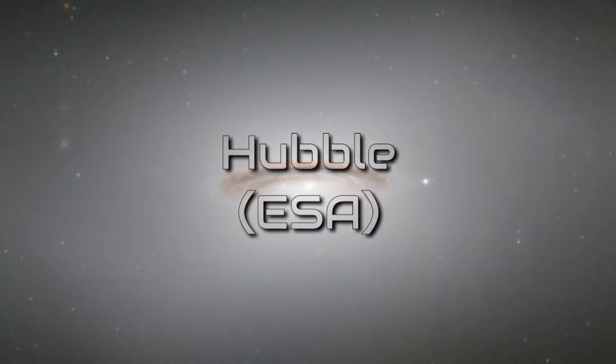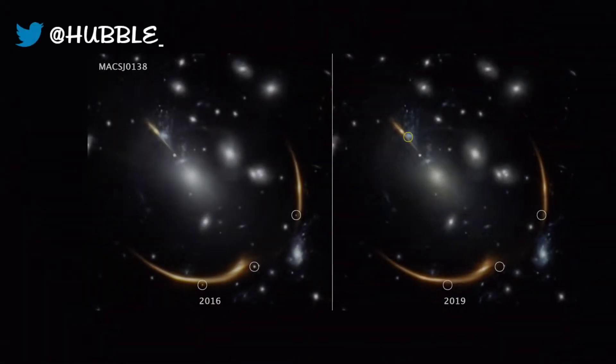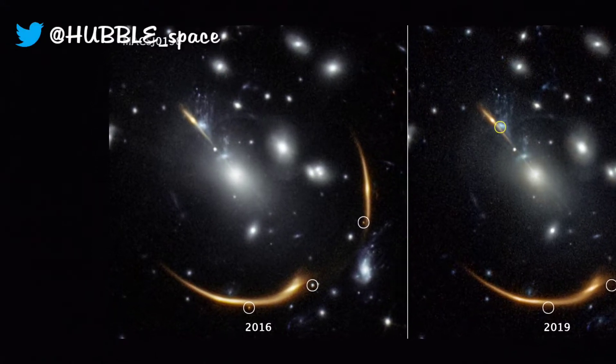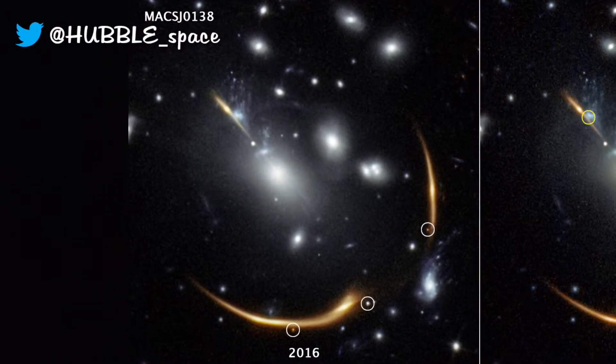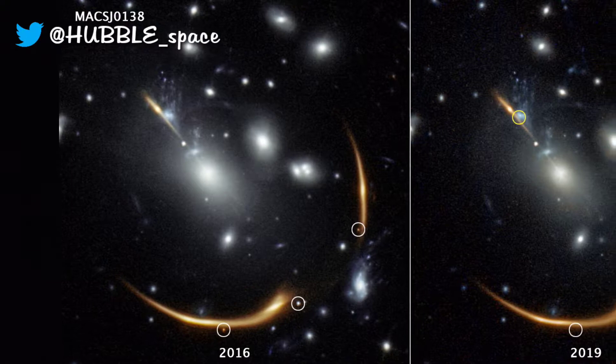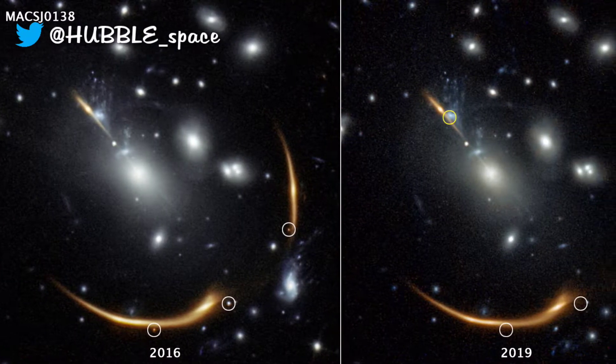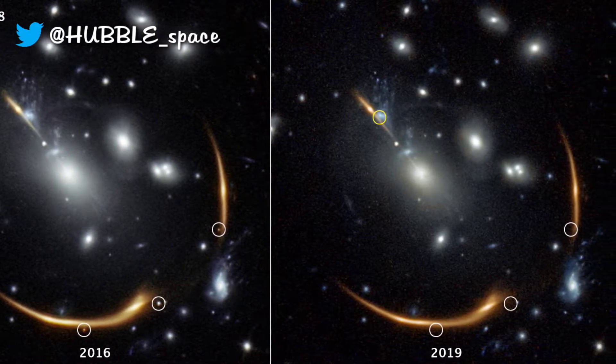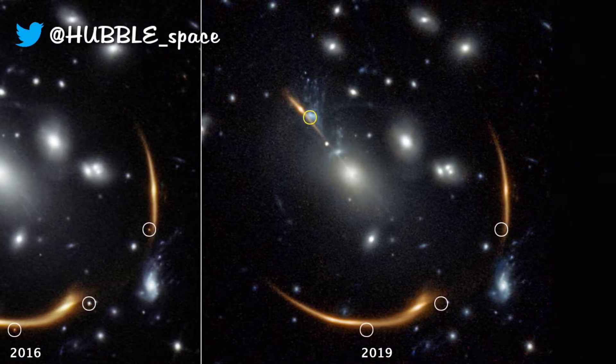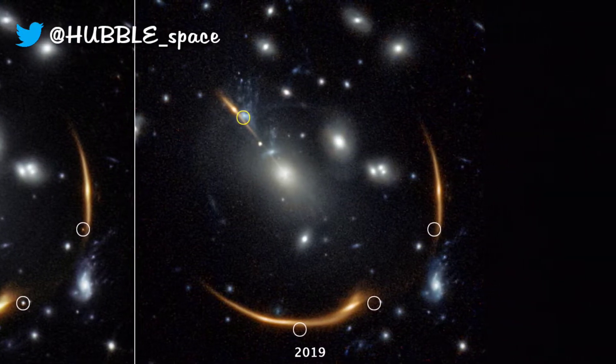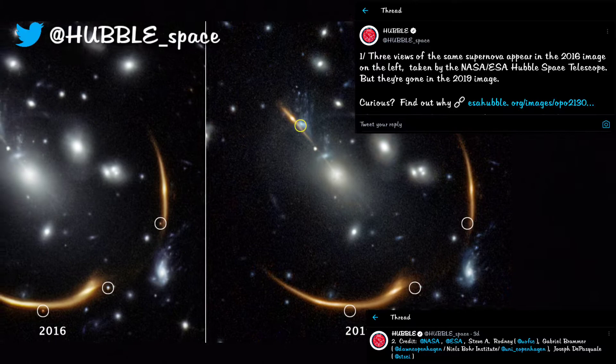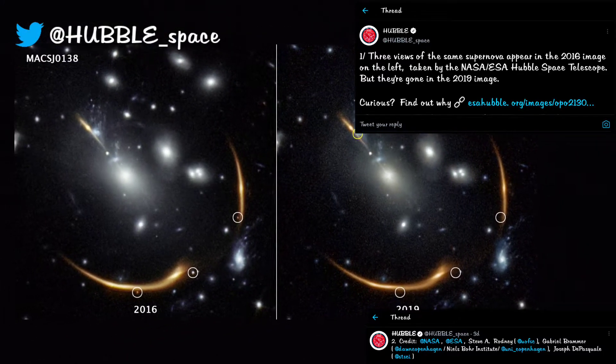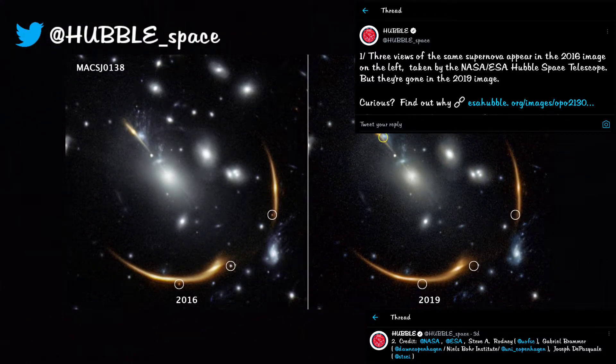From sports to favorite TV shows, we have watched our favorites more than once. This time, would you like a cosmic replay? Scientists have predicted a supernova replay in 2037. This supernova was last seen in 2016. Due to immense gravitational lensing by the foreground galaxy cluster MACS J0138, the light from the supernova will be seen in 16 years from now.